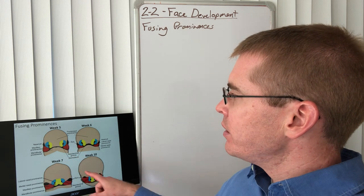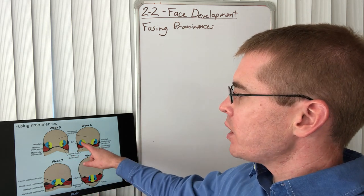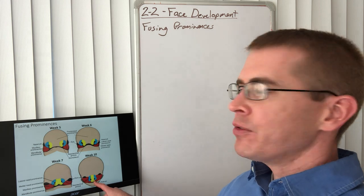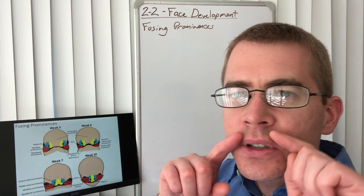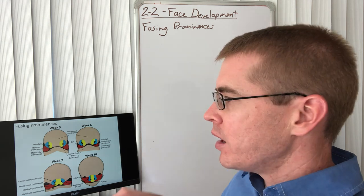We can see that the medial nasal prominences fuse in the midline, forming the philtrum of the lip. That's why the philtrum of the lip looks different than the surrounding structures.